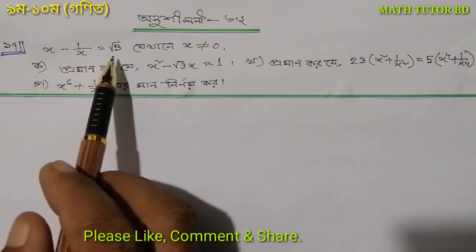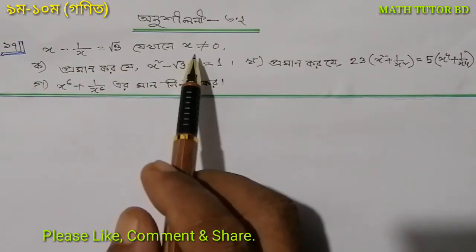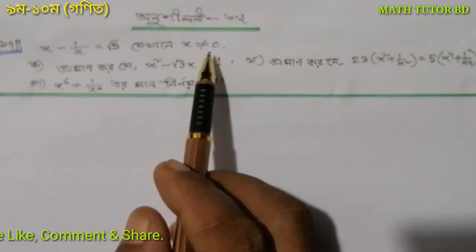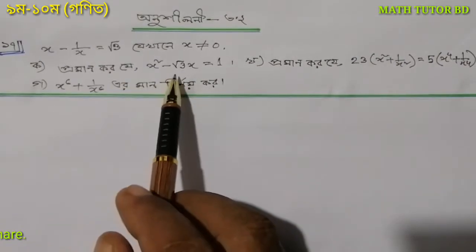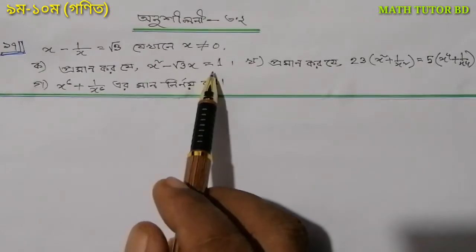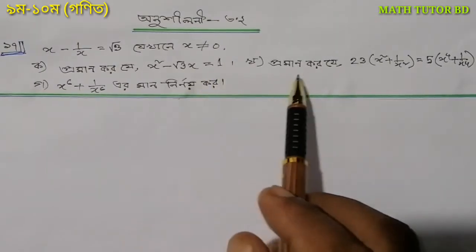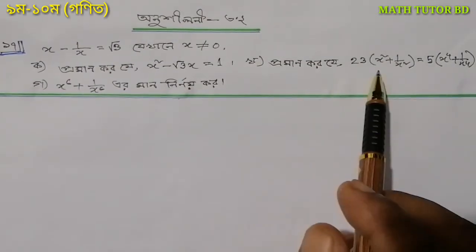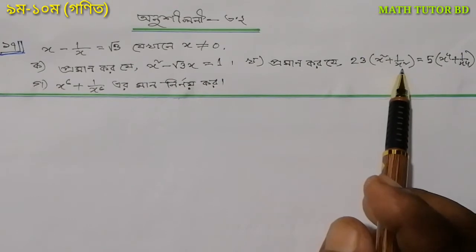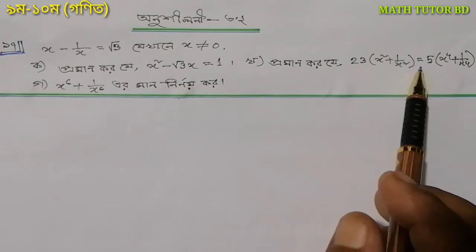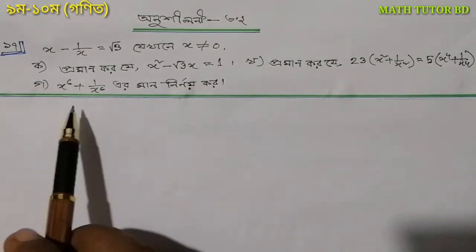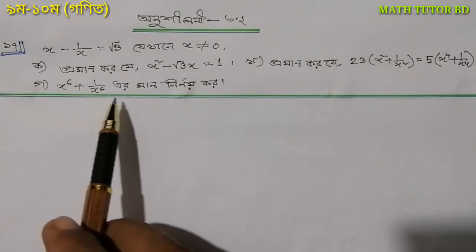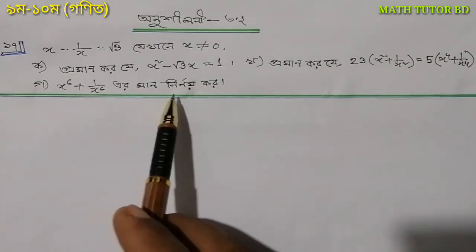x² divided by x is equal to root 3, where x is not equal to 0. Prove that x² minus root 3 x is equal to 1. Also prove that x² plus 1 by x² is equal to 5, x² to the power 4 plus 1 by x² to the power 4, and x² to the power 6 plus 1 by x² to the power 6.